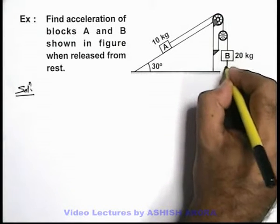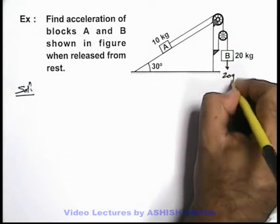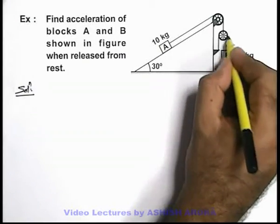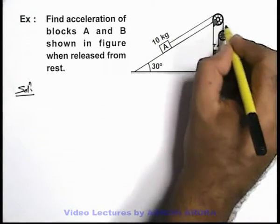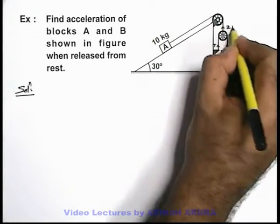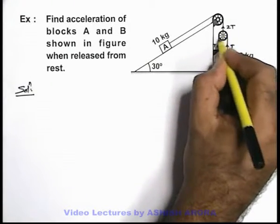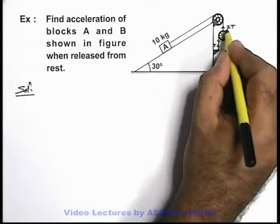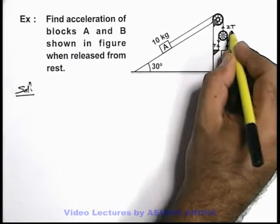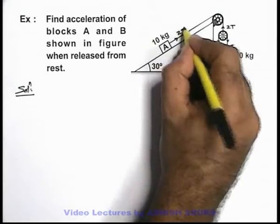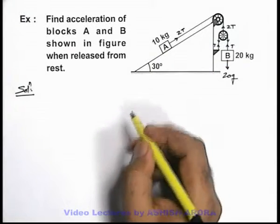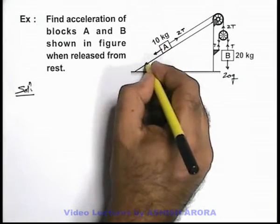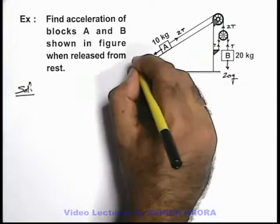Block B will experience its weight 20g in the downward direction, and a tension T in the string in the upward direction. In the whole string the tension will remain the same, and in this string we can say the tension will be 2T, as we can consider this pulley to be ideal. So the net downward force acting on the pulley has to be balanced by the net upward force acting on it. Therefore block A will be pulled in the upward direction with force 2T, and in the downward direction it will experience the parallel component of force along the inclined plane.